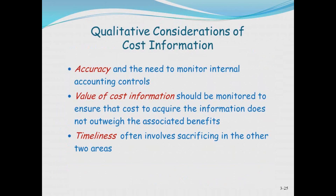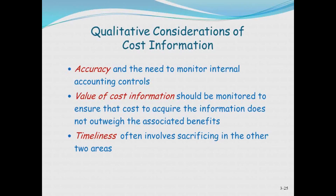Some qualitative considerations: accuracy goes without saying — as you consider your internal cost information, you want to be accurate. Everything you do in business has a cost-benefit tradeoff. Activity-based costing is a great way to do costing but comes with a fairly high cost itself, so you need to decide whether it's worth it. Timeliness is also important — the more detail and exactness required, the longer it takes, so you need to think about these issues to ensure you're doing costing in the appropriate way for your company.